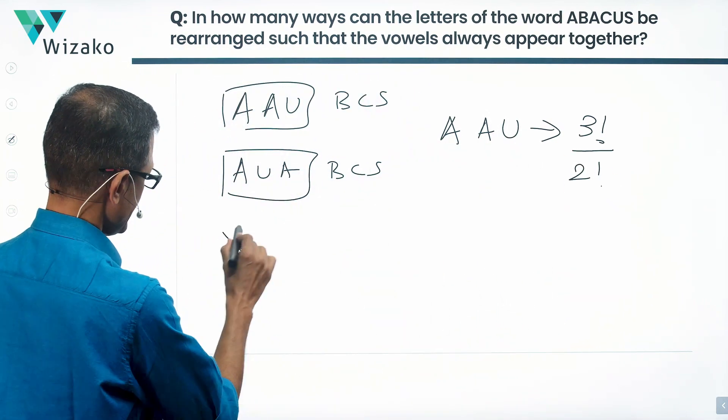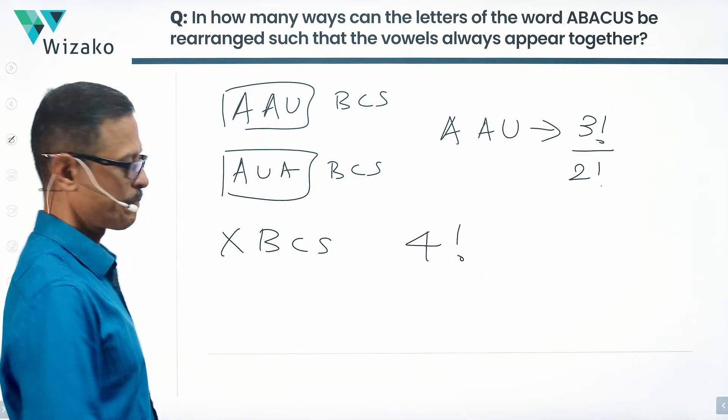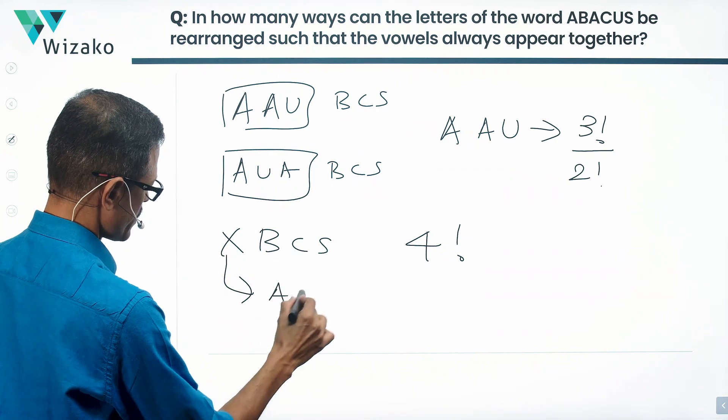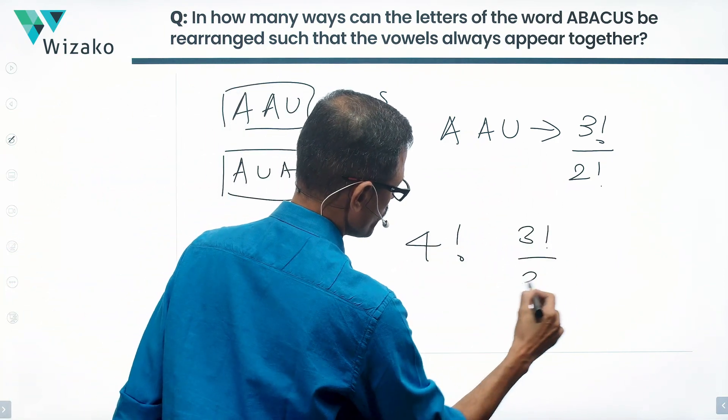So this X, B, C, S can reorder in four factorial ways. This X within it, which is A, A, U, can reorder in three factorial upon two factorial ways.